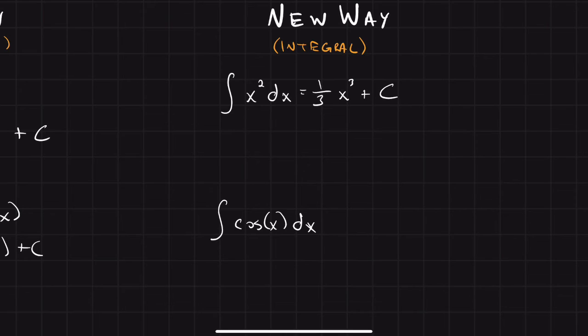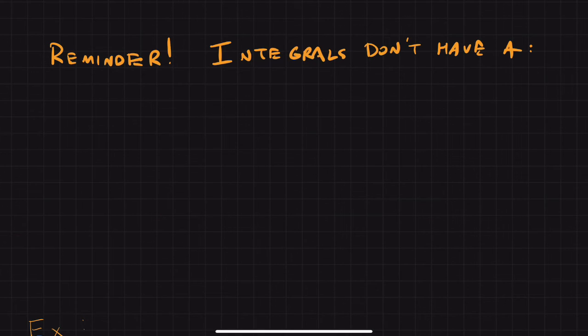And to do this with integrals, you would just be given the integral of cosine of x dx, which is telling you to find the antiderivative of cosine of x. And the answer would be the same, sine of x plus c.